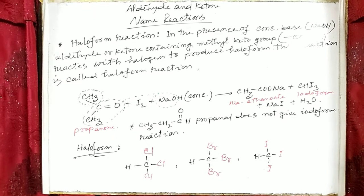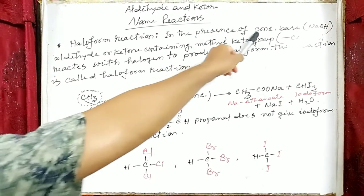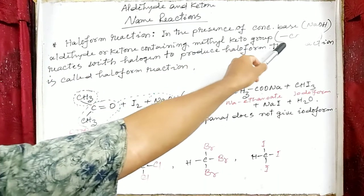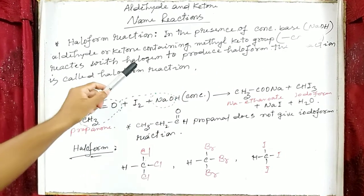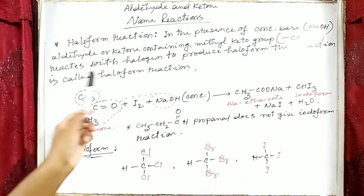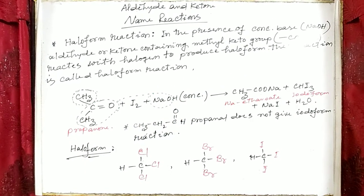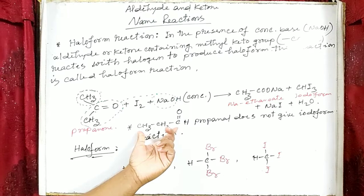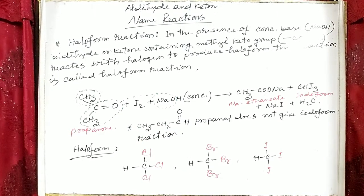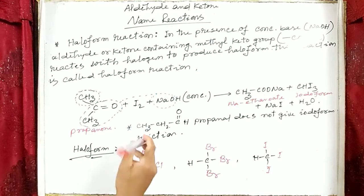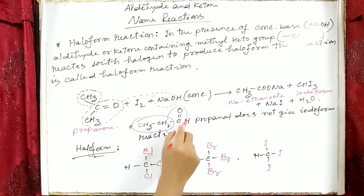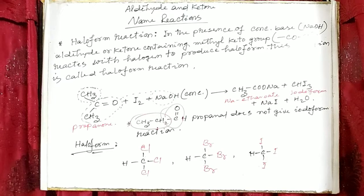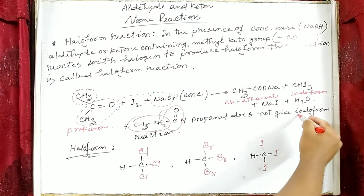The statement of haloform reaction: in the presence of concentrated base, aldehyde or ketone containing a methyl ketone group (also called acetyl group) reacts with halogen to produce haloform. This reaction is called haloform reaction. If you observe the structural formula of propanal, there is no methyl ketone group — propanal contains an ethyl group — so it does not give the haloform reaction. The iodoform reaction is also an example of haloform reaction.